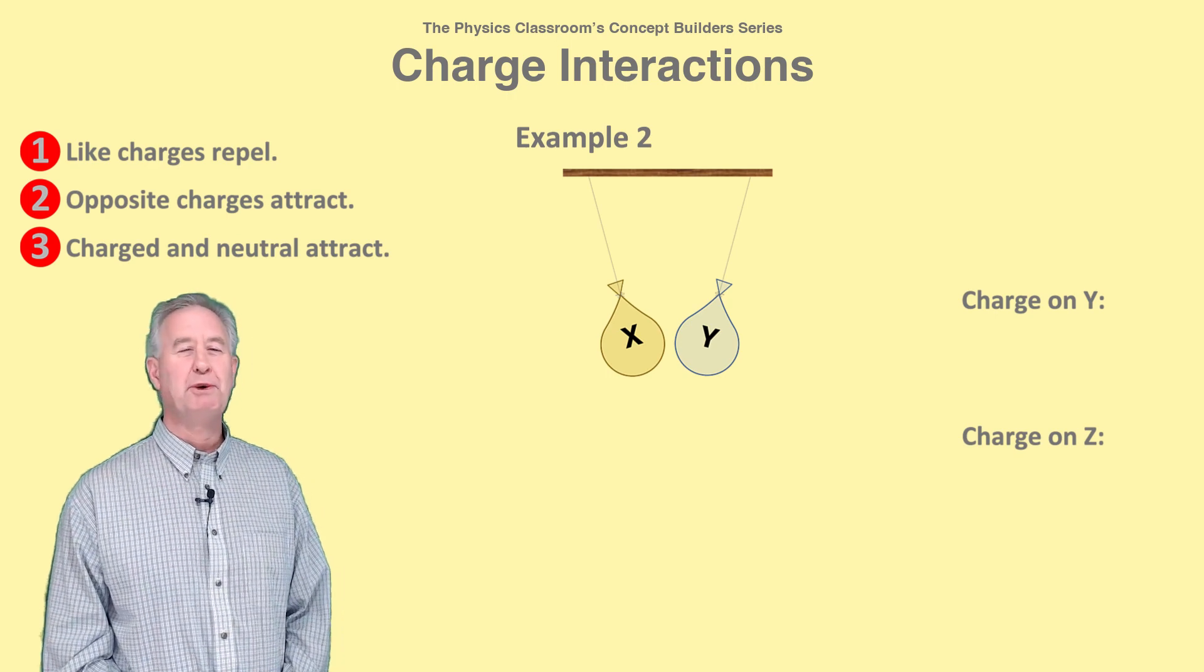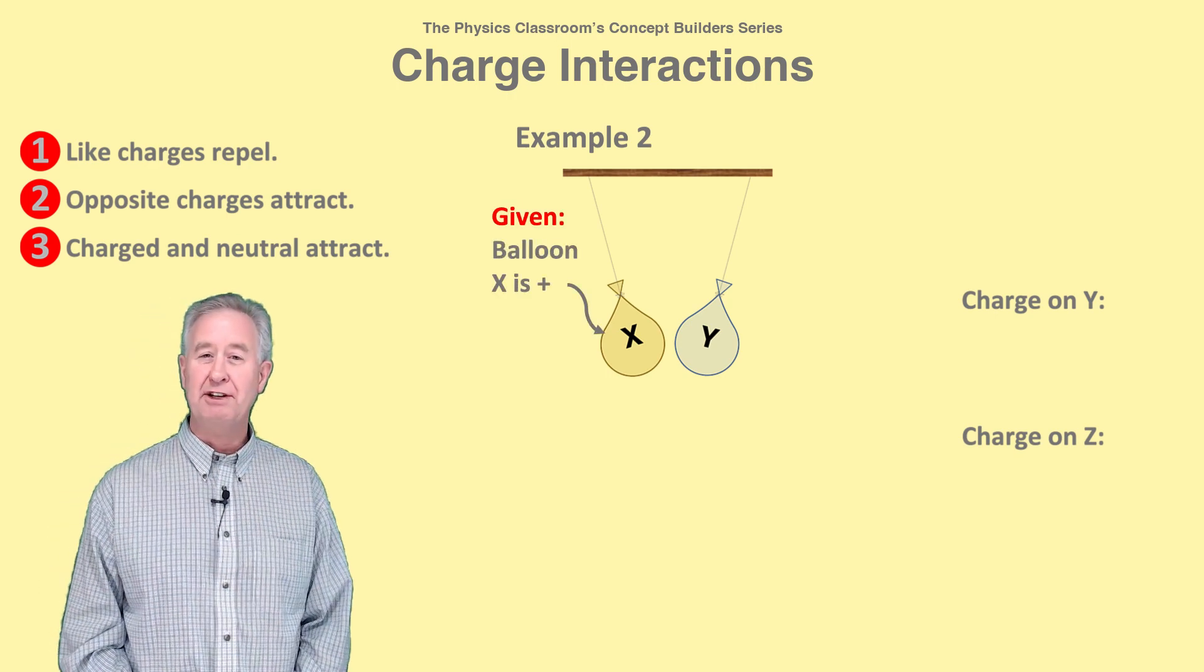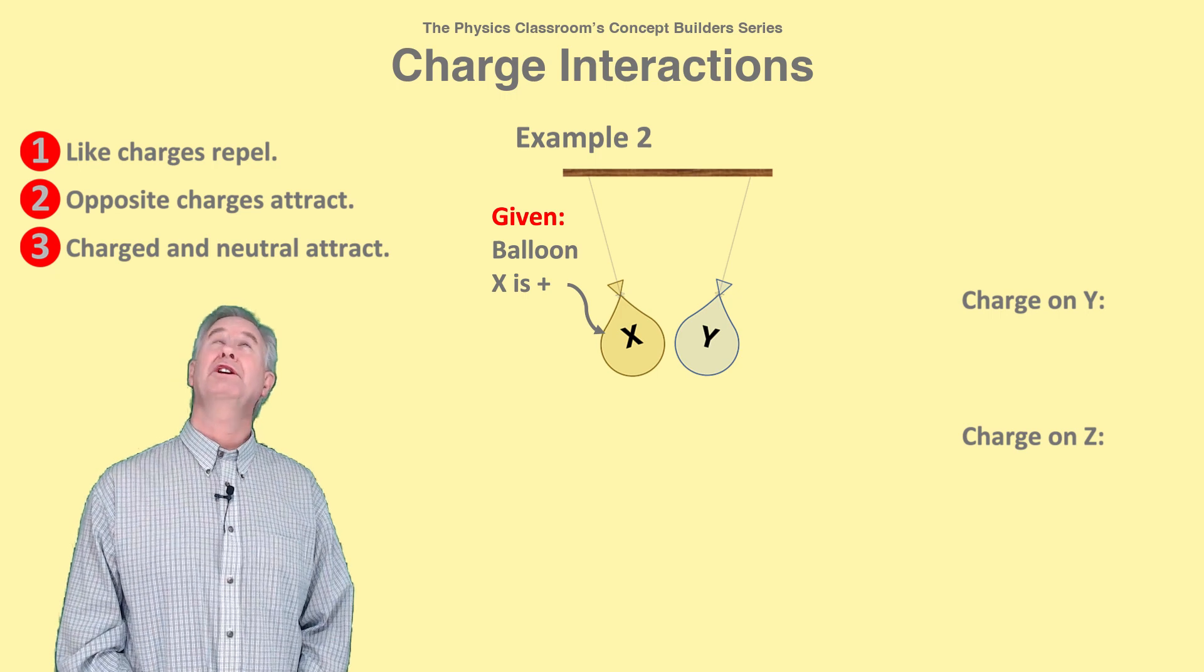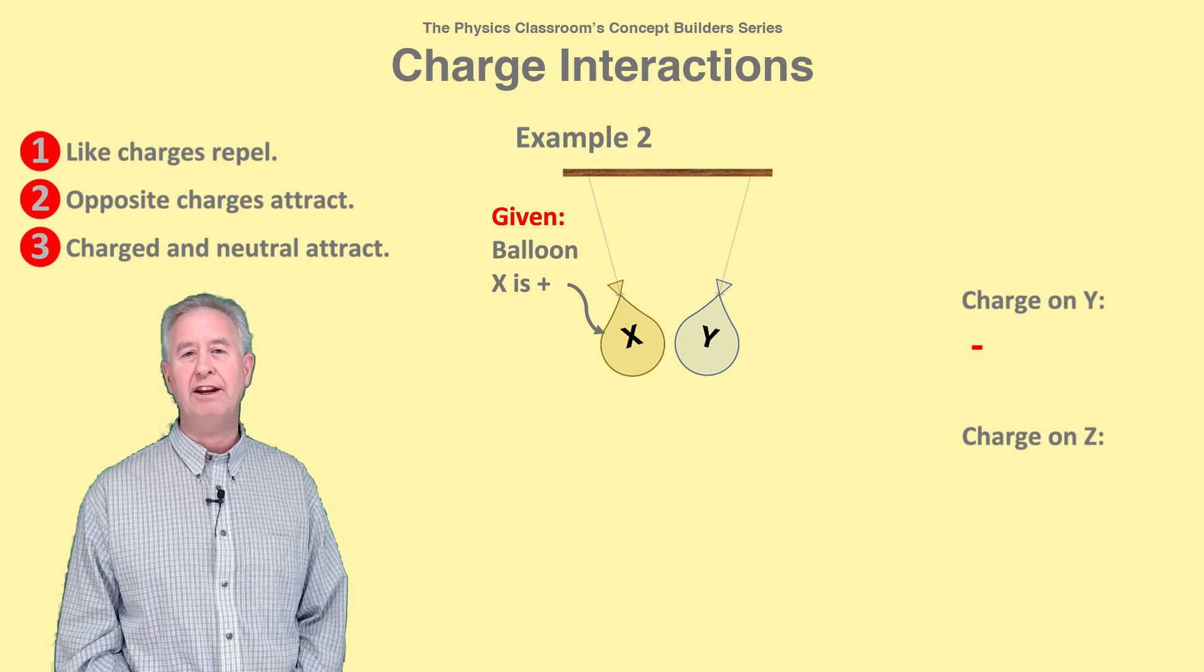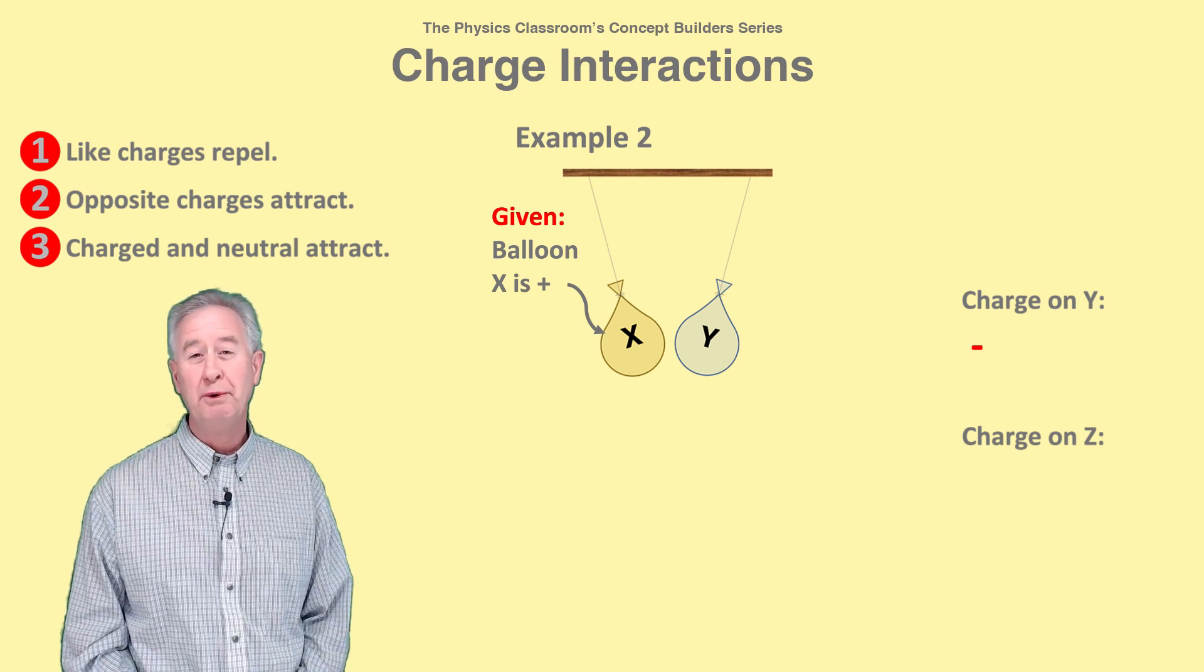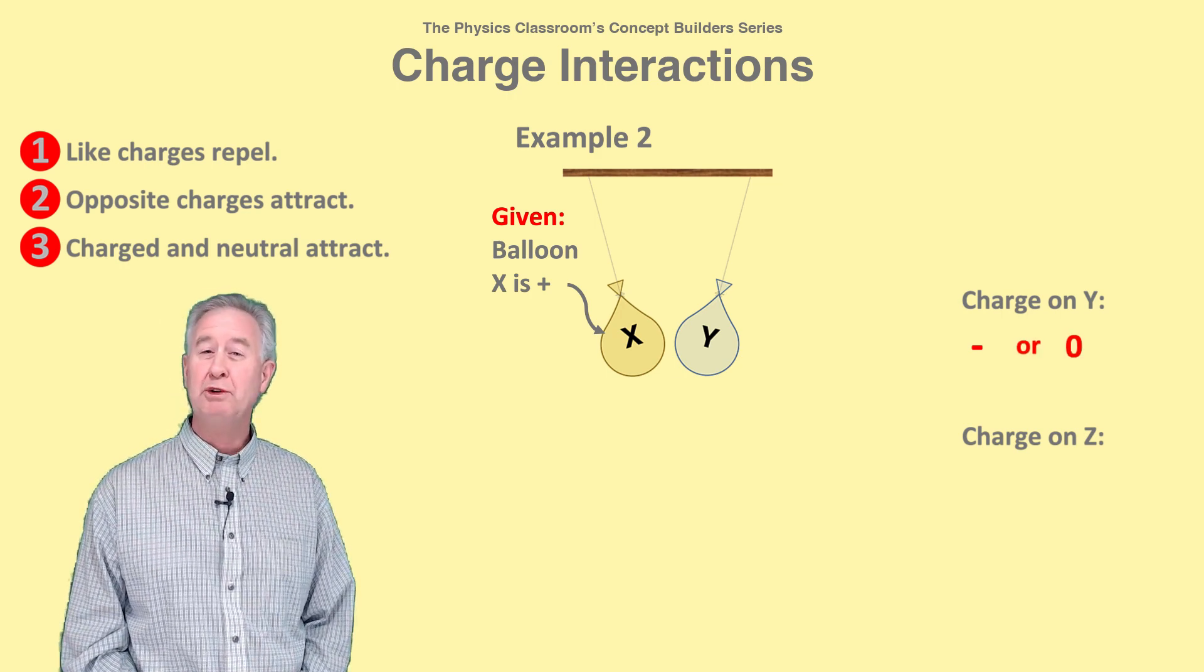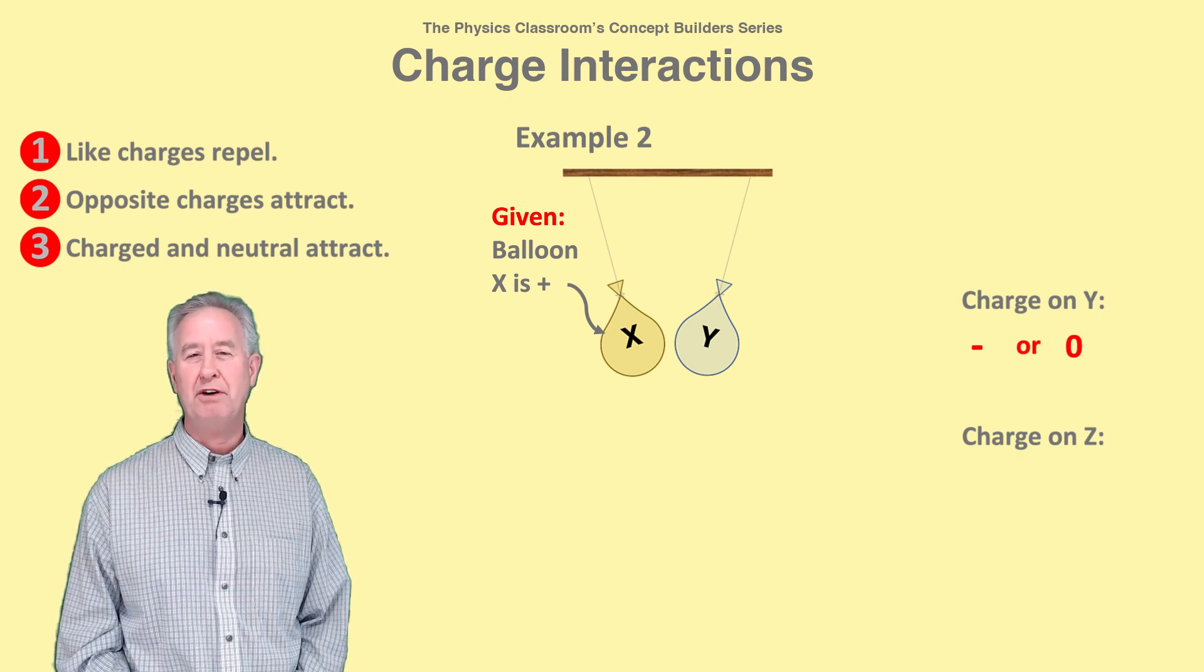In example two, we know X is positive and X and Y attract. According to rule two, opposites attract, so Y could be negative. But according to rule three, Y could also be neutral since a charged and neutral object attract.